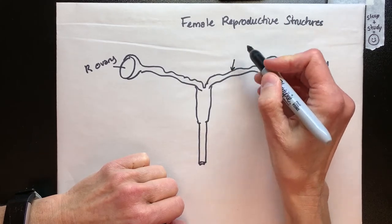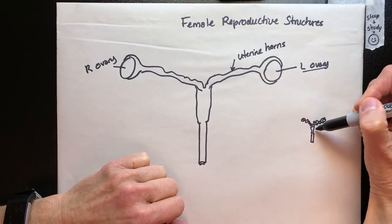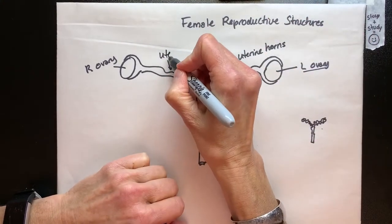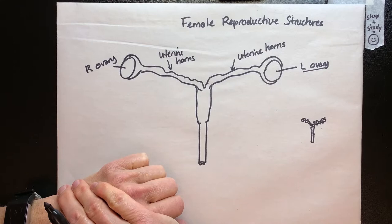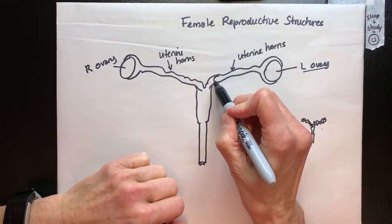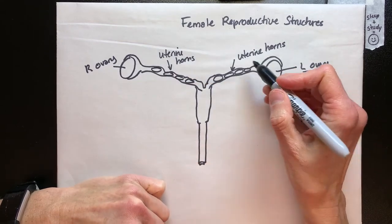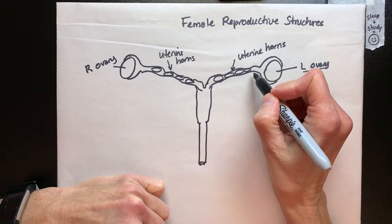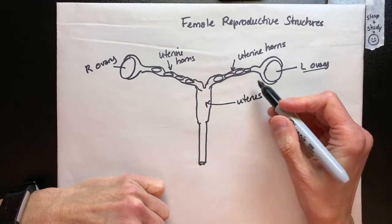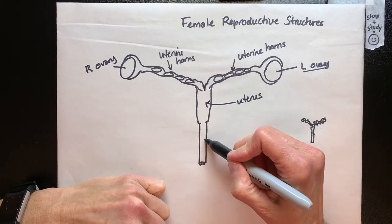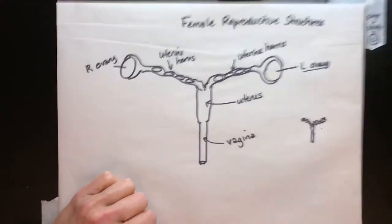The ovary is attached to what we used to call the fallopian tube, but now renamed the uterine tube, because that's more specific. In the fetal pig, however, we're going to call these uterine horns. The fetal pig, dog, and cat all gestate their young in these tubes — kittens, pups, and fetal pigs all develop inside the uterine horns, not in the uterus. The uterus leads to the vagina, and that leads out the exit. So that's the female reproductive structure of the pig. It'll be behind the urethra and in front of the rectum.